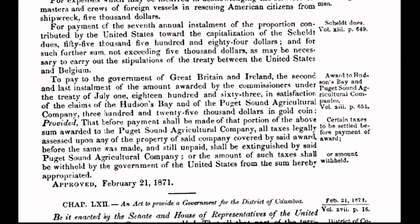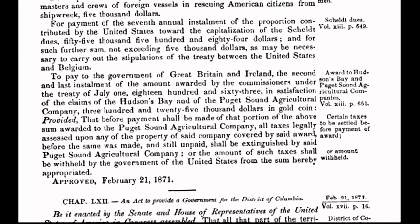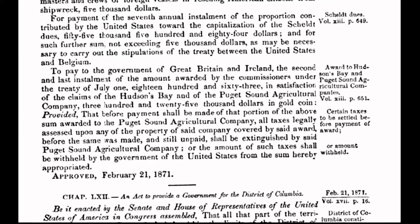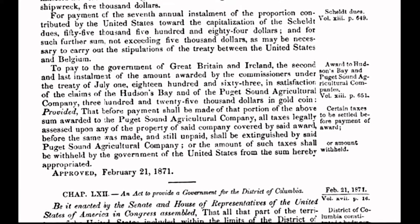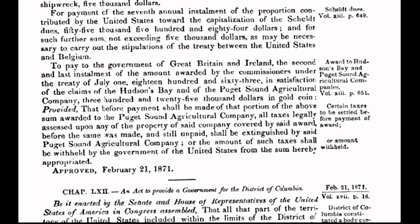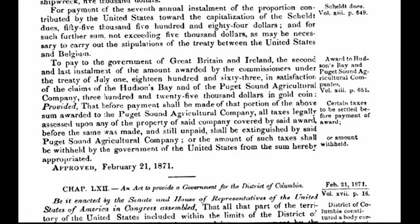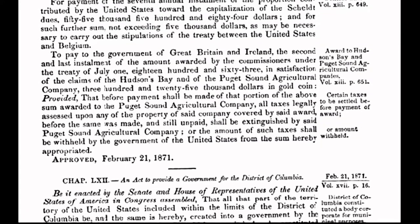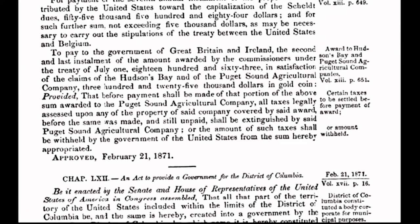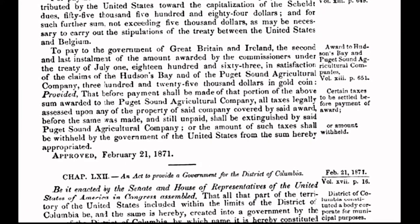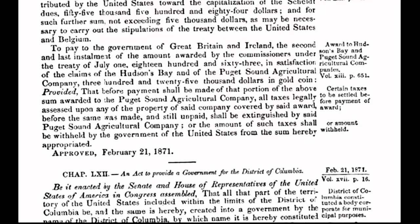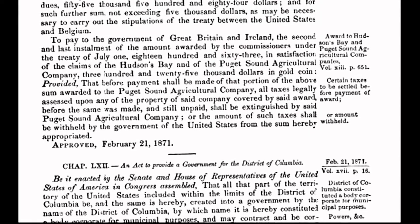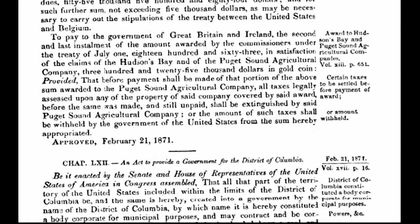With no constitutional authority to do so, Congress creates a separate form of government for the District of Columbia, a 10-mile-square parcel of land. The act was passed when the country was weakened and financially depleted in the aftermath of the Civil War.